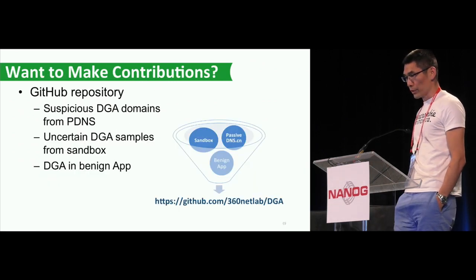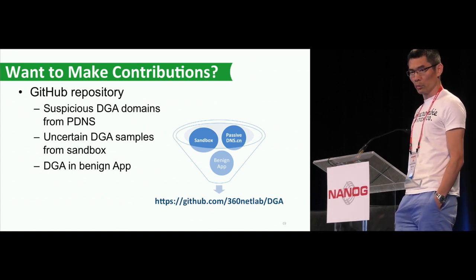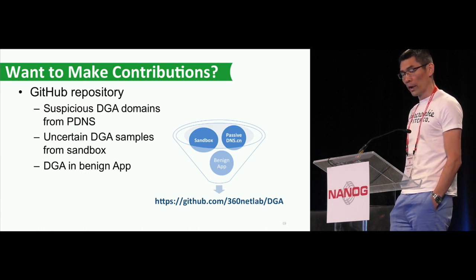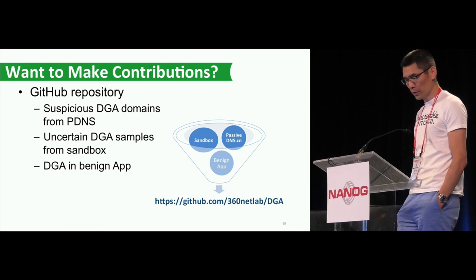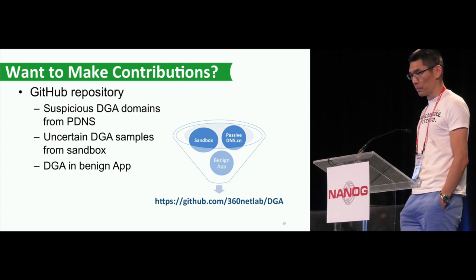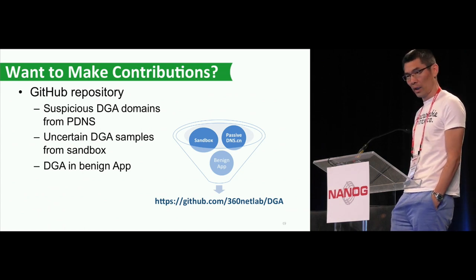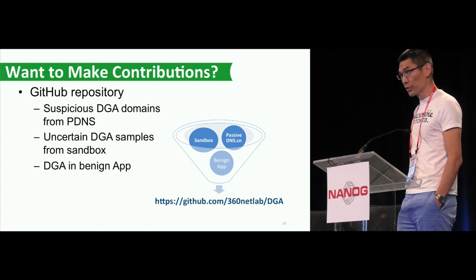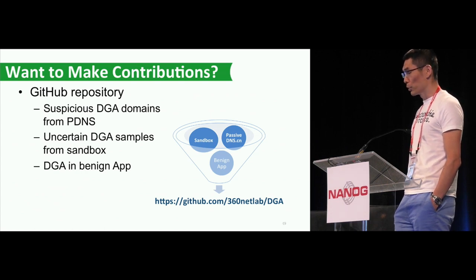Right now we have this GitHub repository. On this repository, we have suspicious DGA domains without MD5s. We also have some MD5s where we haven't figured out the algorithm yet. And also, we keep a list of benign DGA applications — meaning the application is not bad, but it just has this DGA behavior. Security researchers are more than welcome to go take a look, and if you can make contributions, that's going to be great.